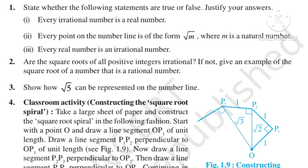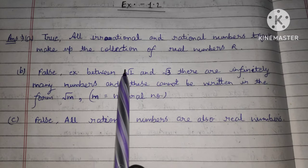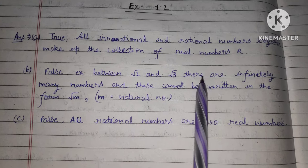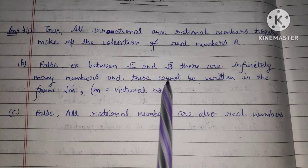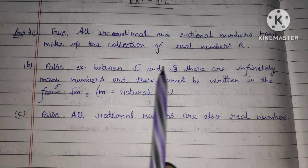The second question is: every point on the number line is of the form root m, where m is a natural number. This is false. For example, between root 2 and root 3 there are infinitely many numbers, and these cannot be written in the form of root m.